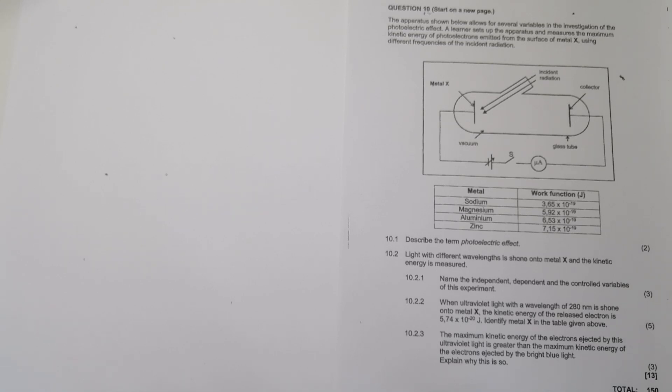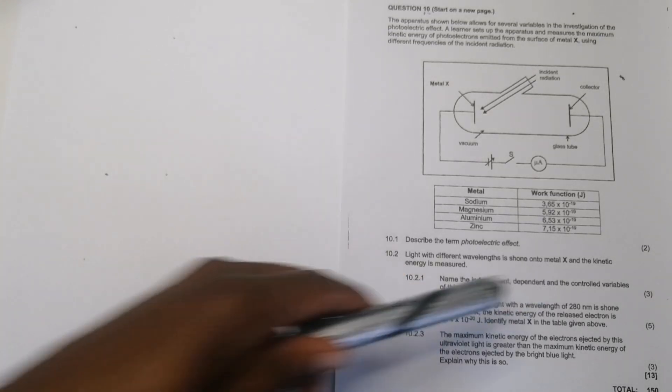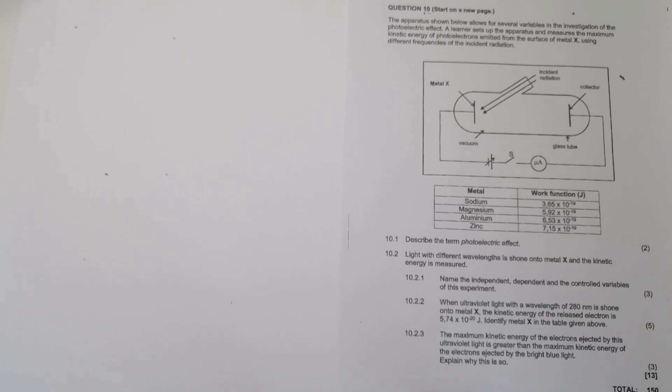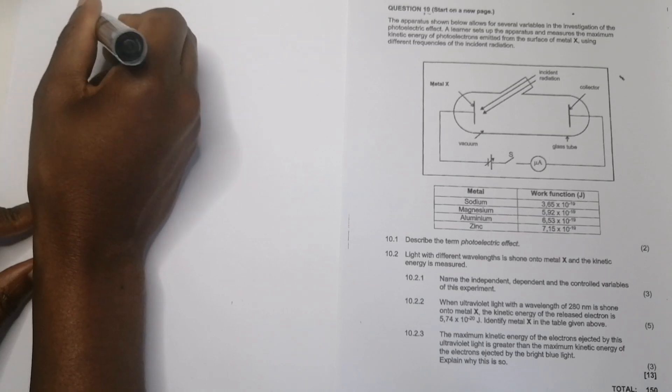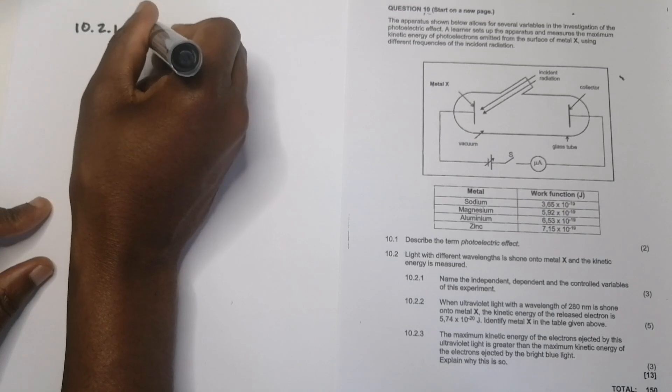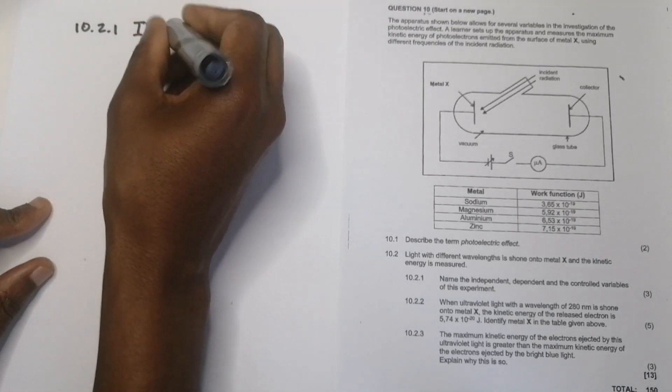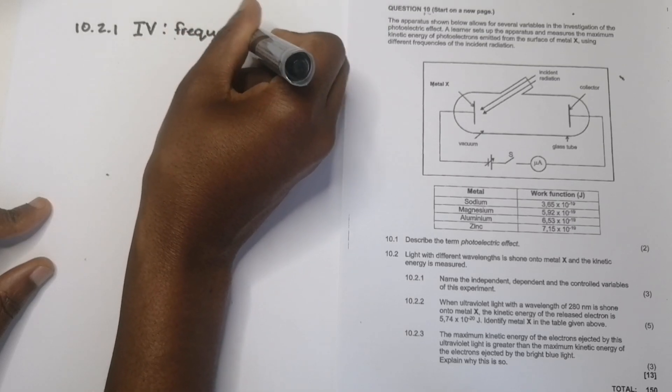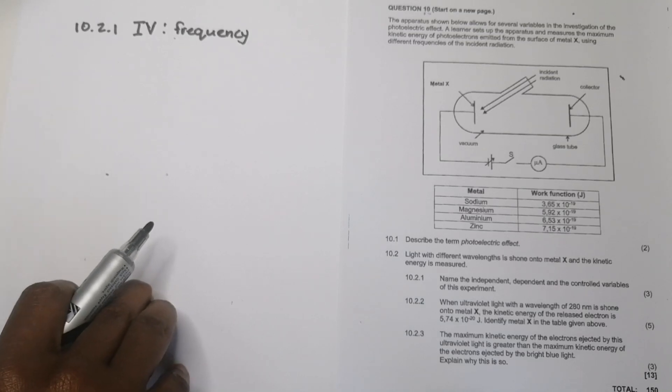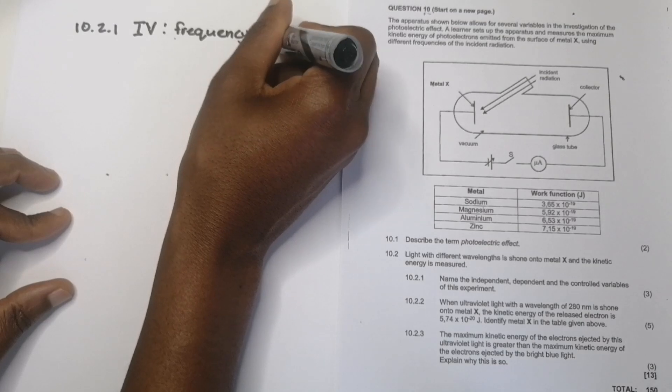All right. Let's look at the next question. They say light from different wavelengths is shown onto metal X and the kinetic energy is measured. All right. They say name the independent, dependent and the control variables in this experiment. All right. So what did they do? They took light of different wavelengths. Right. So what are we changing? It's the wavelengths. So that means our independent variable. So in 10.2.1, our independent variable, if you don't mind, I'm just going to call it IV there. Our independent variable, it's going to be the frequency of light, if you may call it that. If you said different lights, different sources of light, I would accept that. OK, so I would take the frequency of light as that.